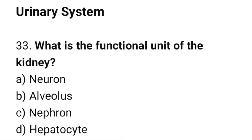Question number 33: What is the functional unit of the kidney? The correct answer is C: Nephron.